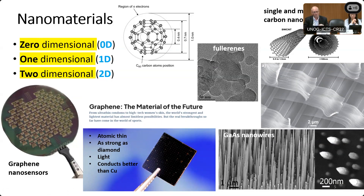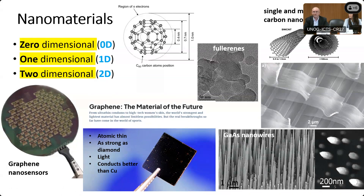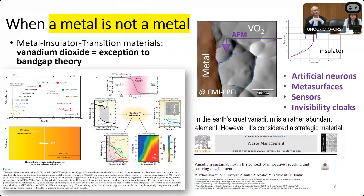Nanowires are also one-dimensional objects with a diameter on the order of a few nanometers and a much greater length. They can be used to build electronic devices, for energy conversion, and many other applications. And of course, in the early 2000s, the Nobel Prize was awarded to two physicists who invented graphene — a monolayer of carbon with amazing properties: atomic thinness, the strength of diamond, and the high conductivity mentioned before. Today we can fabricate this material on wafer using the same processes as transistor manufacturing, bringing it into real products.